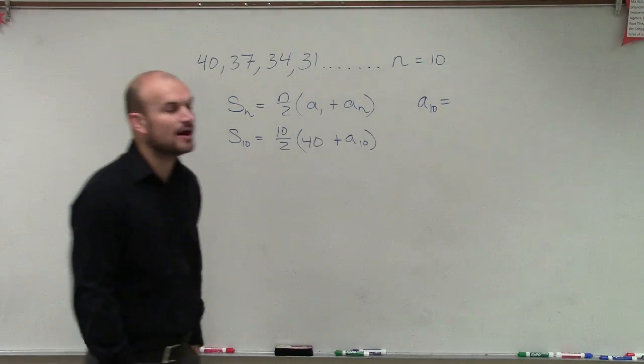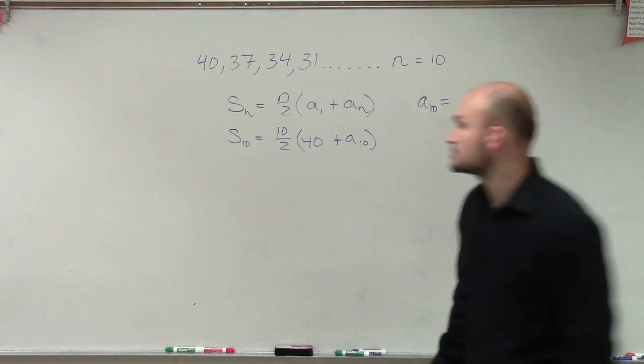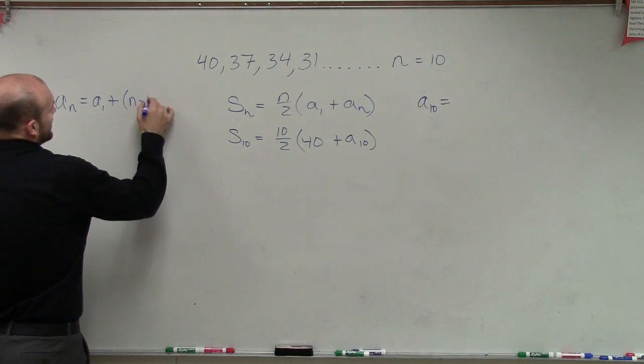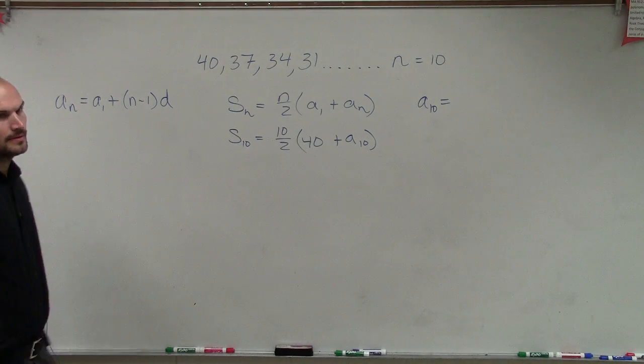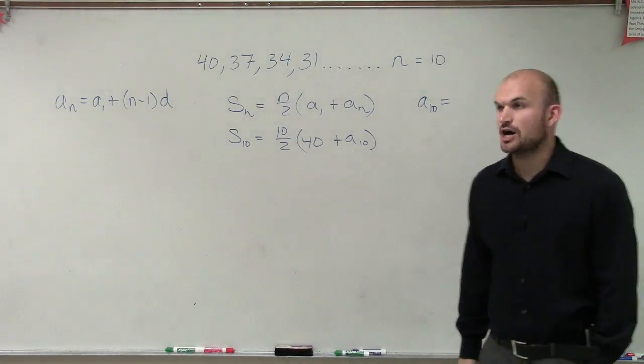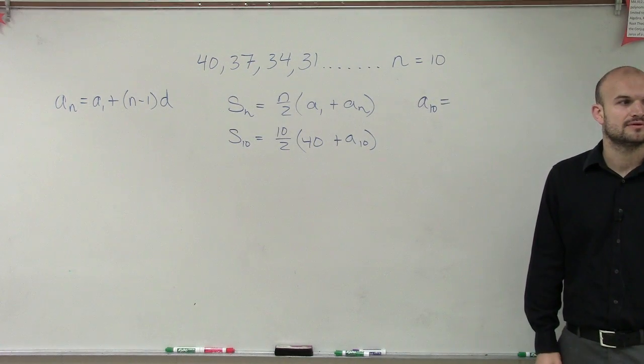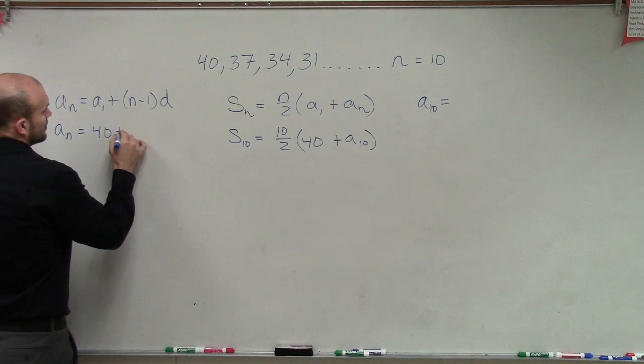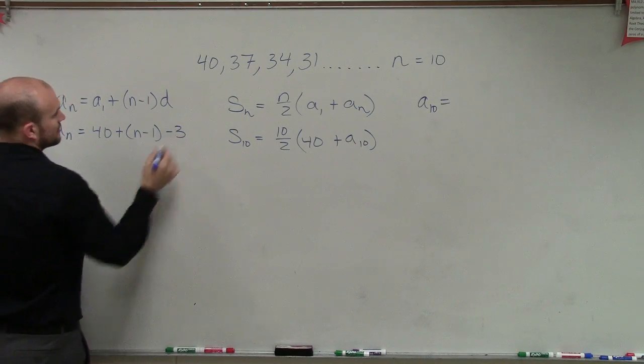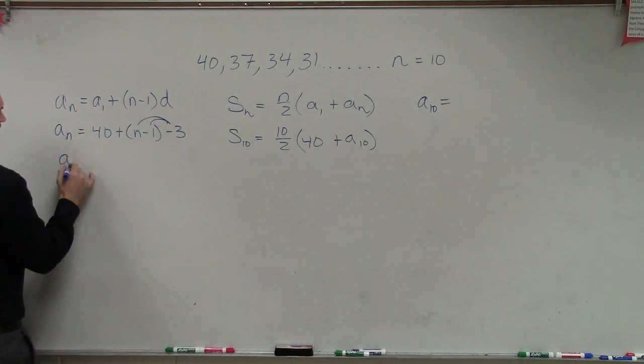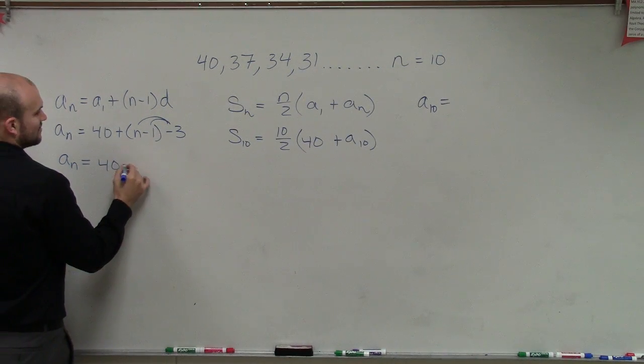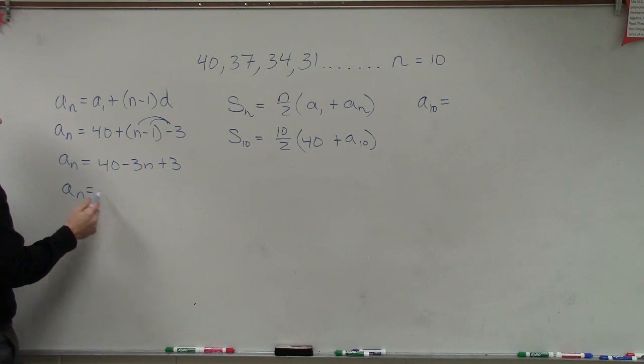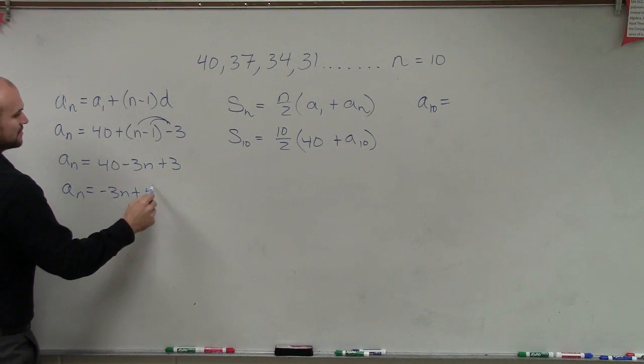What we need to do to be able to figure that out is we need to figure out what exactly the formula is, correct? So let's go back to our other formula, which says a sub n equals a sub 1 plus (n minus 1) times d, right? Now we look at this formula and we notice that the d, our difference, is going to be negative 3. And our a sub 1 is 40. So a sub n equals 40 plus (n minus 1) times negative 3. Now apply the distributive property. So we have a sub n equals 40 minus 3n plus 3. Therefore, a sub n equals negative 3n plus 43.